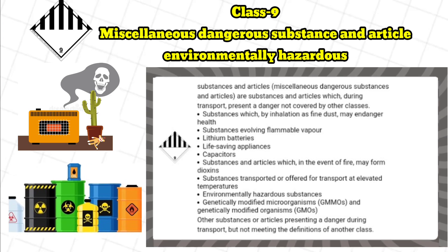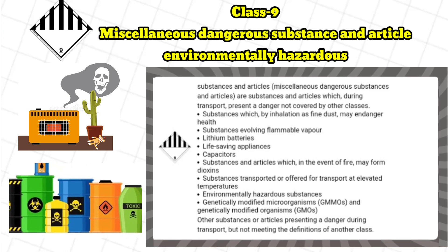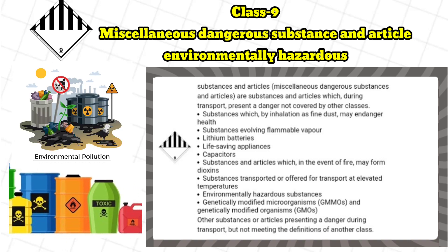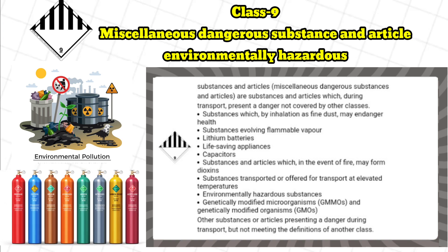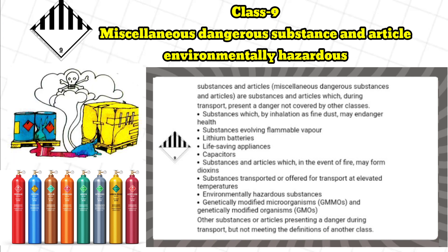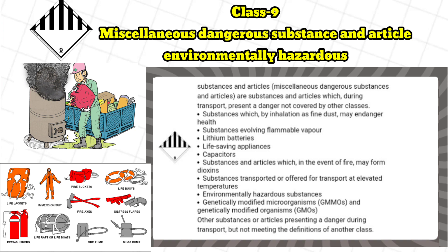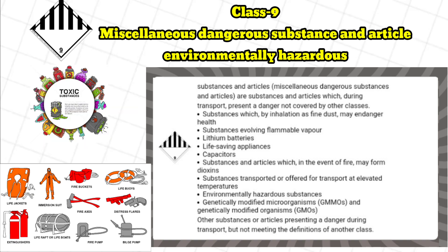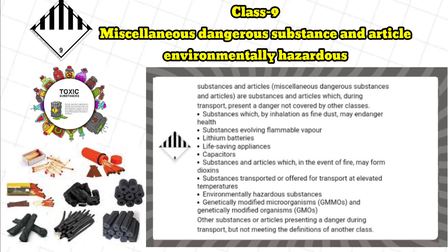Class 9, Miscellaneous dangerous substances and articles and environmentally hazardous substances: these are substances and articles which, during transport, present a danger not covered by other classes. This includes: 1. Substances which, by inhalation as fine dust, may endanger health. 2. Substances evolving flammable vapor. 3. Lithium batteries, life-saving appliances, capacitors. 4. Substances and articles which, in the event of fire, may form dioxins. 5. Substances transported at elevated temperatures, environmentally hazardous substances, genetically modified microorganisms and genetically modified organisms (GMOs), and other substances or articles presenting a danger during transport but not meeting the definitions of another class.